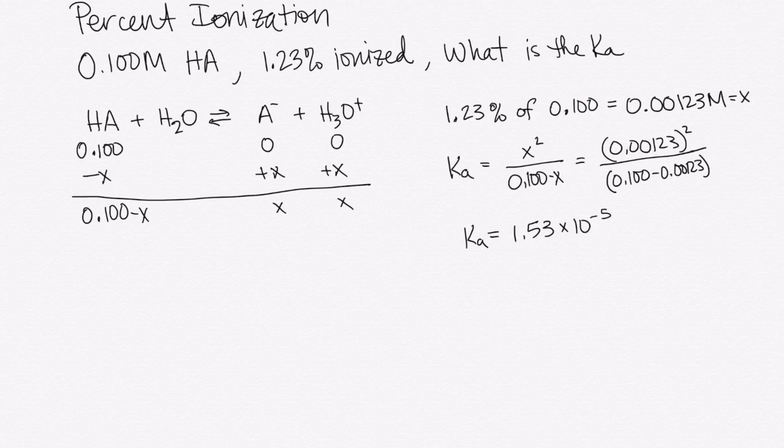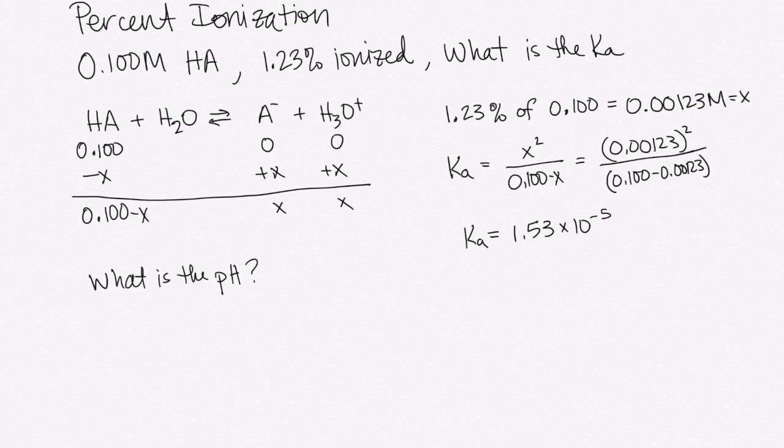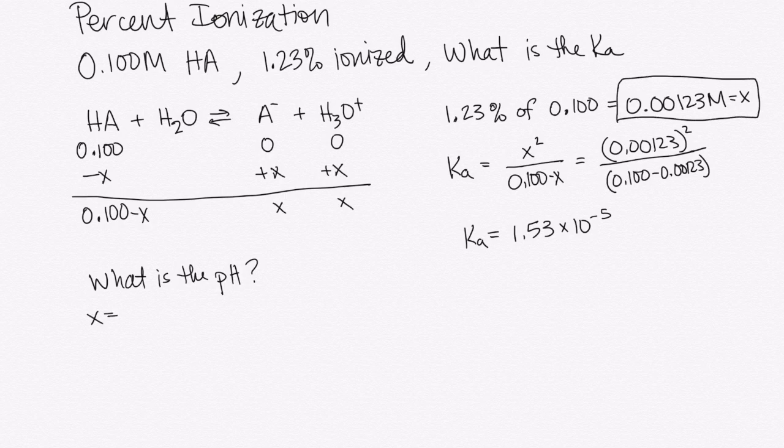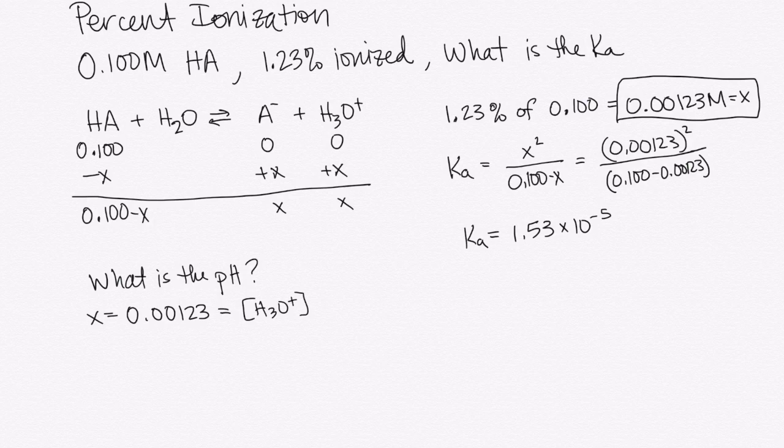There are other questions that they might have asked us about this solution. For example, what's the pH? What's the pH of our solution if we know that it's 1.23 percent ionized and we start with our 0.1 molar? Well, we're going to use our same X that we found over here. That's just the same as our concentration of H3O+. So I can take the negative log of that and I get 2.91. That's the pH of my 1.23 percent ionized 0.1 molar solution.